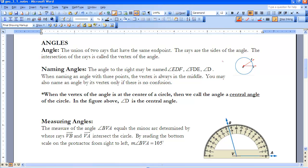So here we have ray DE and ray DF. They intersect at point D, so that means the vertex of our angle is D.